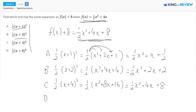And for option D, it says 1 half of x plus 8 squared. So 1 half of x squared plus 16x plus 64. And then you're going to distribute the one-half: 1 half x squared plus 8x plus 32.